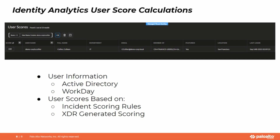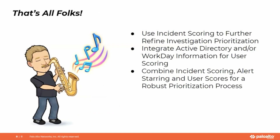This may be something to address — why is this user constantly being involved in these different breaches or incidents and getting their score elevated? It could be that there's a misconfiguration on their system, or they are doing things to weaken the configuration and maybe bypass security controls. Those require some follow-up investigation by the security team to make sure that the risk is reduced. Remember to use incident scoring to further refine your investigation prioritization, integrate your Active Directory and/or Workday information for user scoring, and combine incident scoring with alert starring and user scores to create a robust prioritization process for your security team to tackle the most important incidents first.